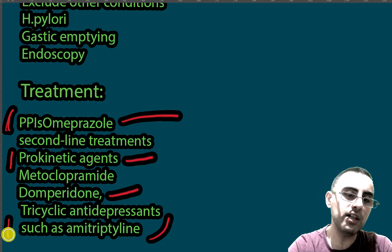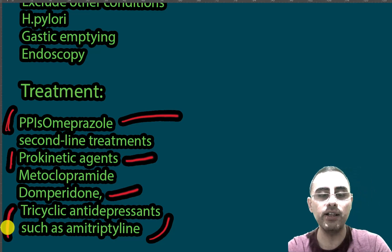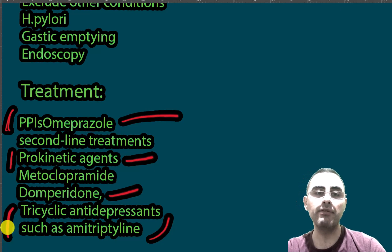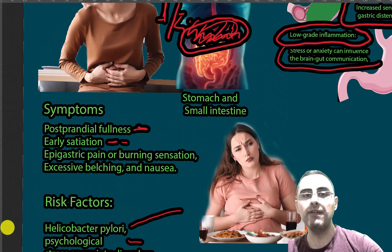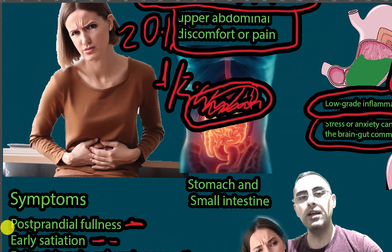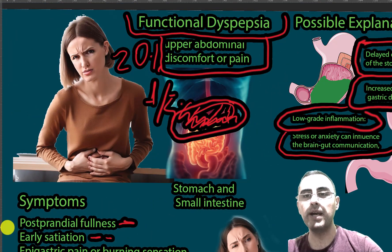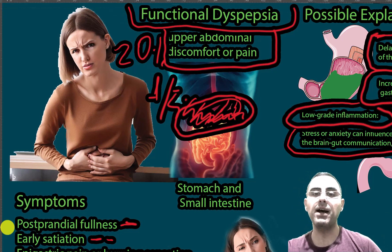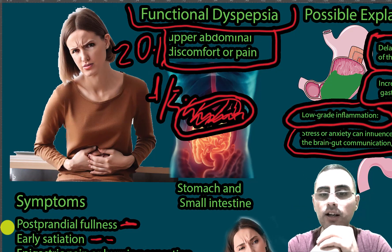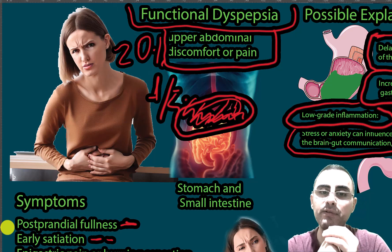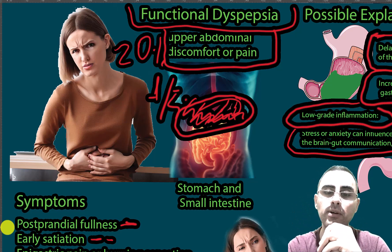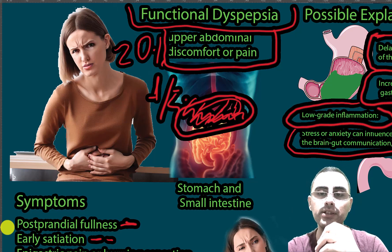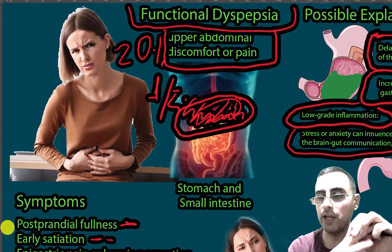In most cases, proton pump inhibitors such as omeprazole, lansoprazole, or pantoprazole are effective. If the psychological component is prominent, tricyclic antidepressants are more effective. Functional dyspepsia is very common, so when patients present with chronic upper abdominal pain and there is no sign of gastroesophageal reflux disease or peptic ulcer disease, functional dyspepsia should be considered.